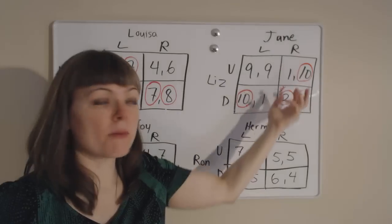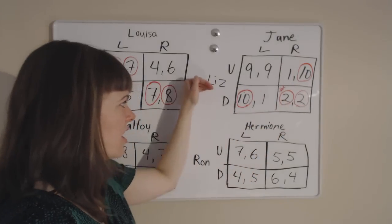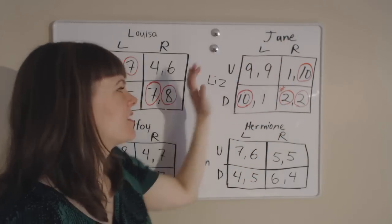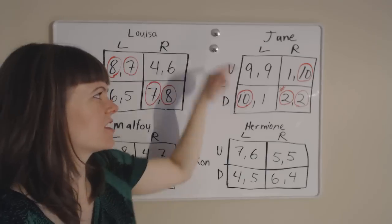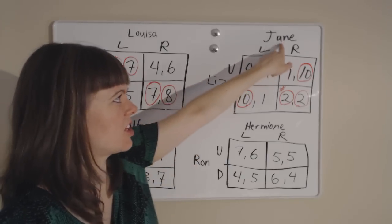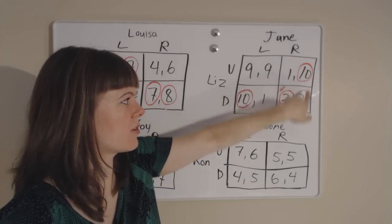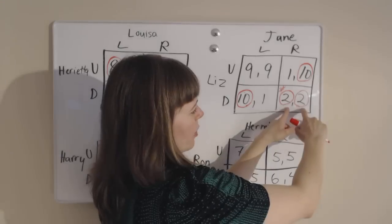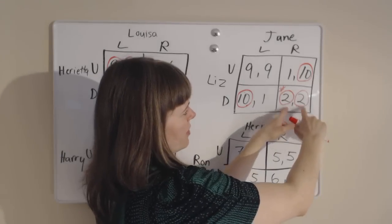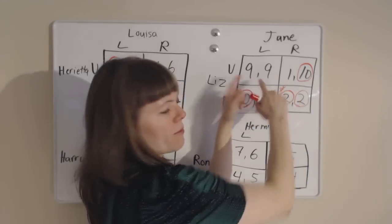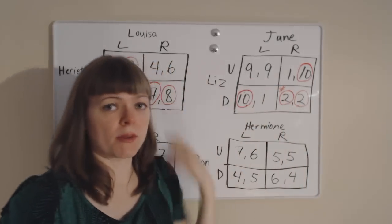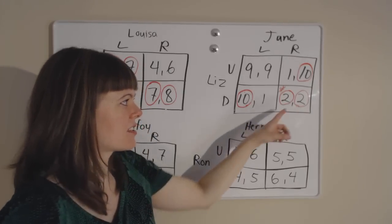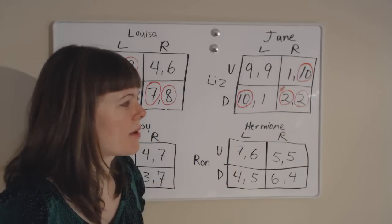Both players have a dominant strategy. Liz's dominant strategy is to always go down, and Jane's dominant strategy is to always go right. But when they get there, they both would have preferred the situation where they both chose their dominated strategy. Any time you have that, it's a prisoner's dilemma.